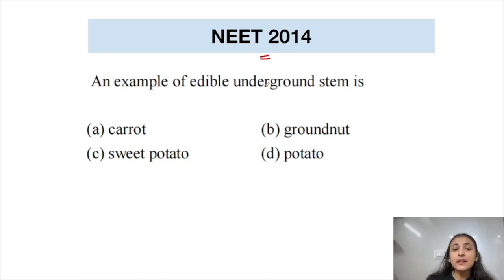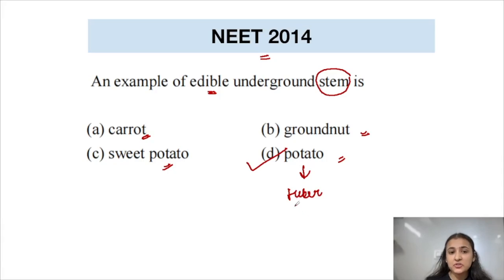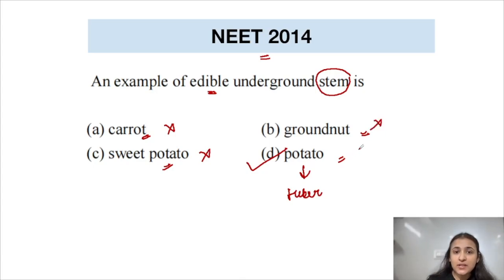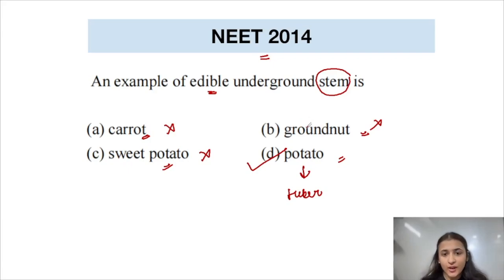From NEET 2014: An example of an edible underground stem is carrot, sweet potato, groundnut, or potato? The correct answer is potato, which is a tuber — an underground stem modification. Carrot and sweet potato are modifications of roots, not stems. Groundnut is a fruit that develops from the ovary of a flower. So the correct answer is option D, potato.